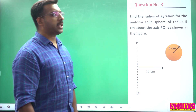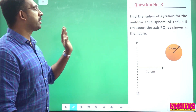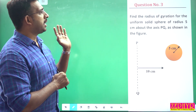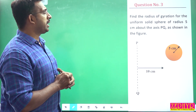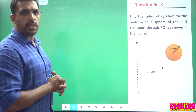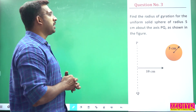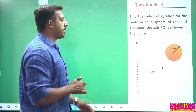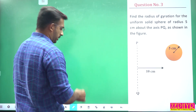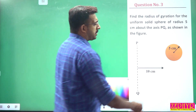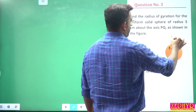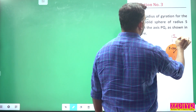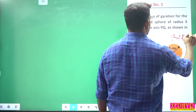Now I will consider rotation dynamics. We need to find the radius of gyration. The rigid body is a uniform solid sphere of radius 5 centimeters. Find the radius of gyration about the axis PQ as shown in the figure. For a solid sphere, ICM = (2/5)·m·R².